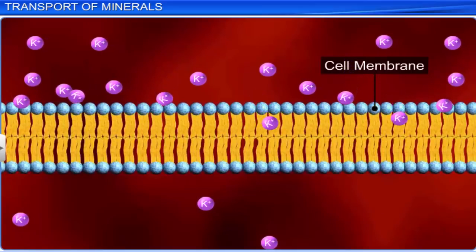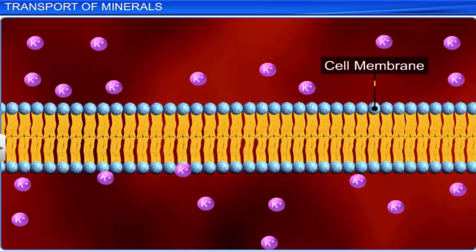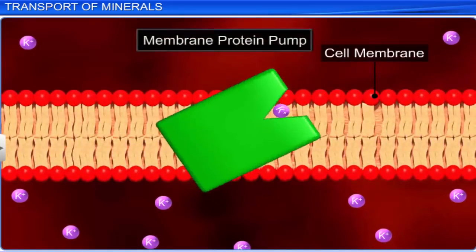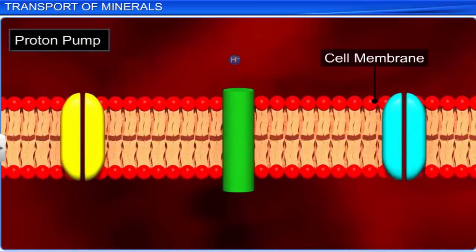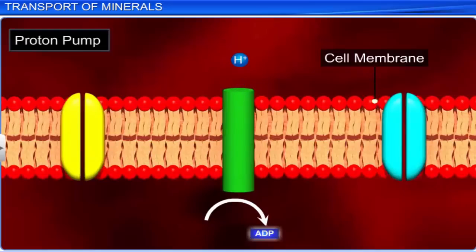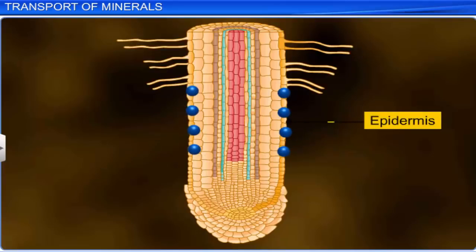Some ions, such as potassium, pass through the cell membrane directly without any energy consumption, via either membrane protein pumps or proton pumps. Active transport begins with positively charged ions such as hydrogen being pumped out of a cell. Due to the displacement of these hydrogen ions, negatively charged ions move inside the cell. They enter the cytoplasm of the epidermal cells of the root, using up the ATP molecule for energy.